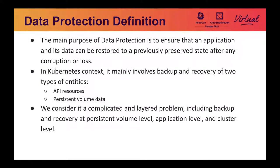So what exactly is data protection in Kubernetes? The main purpose of data protection is to make sure that an application and its data can be recovered to a previously preserved state — we call it a backup — after any corruption or losses. That can include badly rolled-out software updates, data corruption, or disaster recovery when you lose the whole data center.